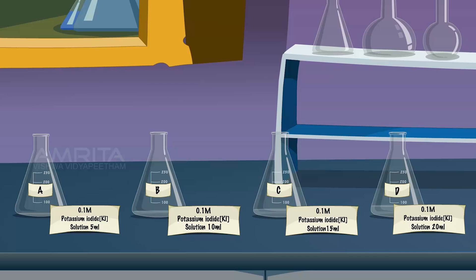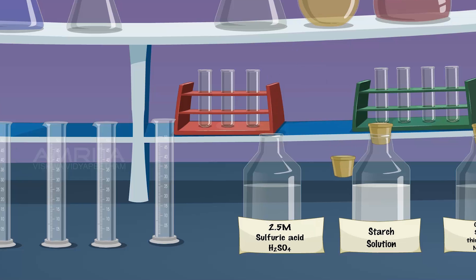Take 5, 10, 15 and 20 ml of 0.1 molar potassium iodide solution in four conical flasks A, B, C and D respectively. Measure 10 ml of 2.5 molar sulphuric acid in a measuring jar.